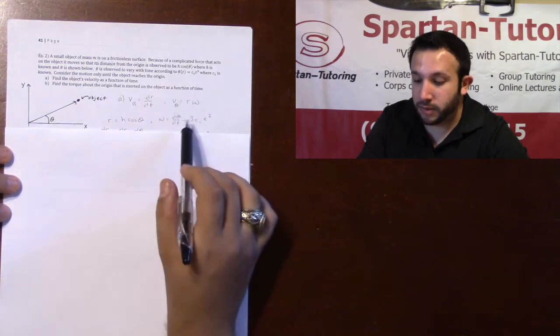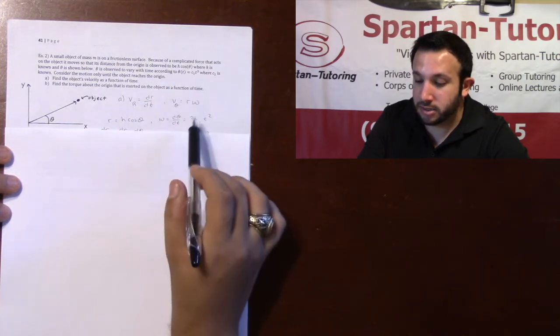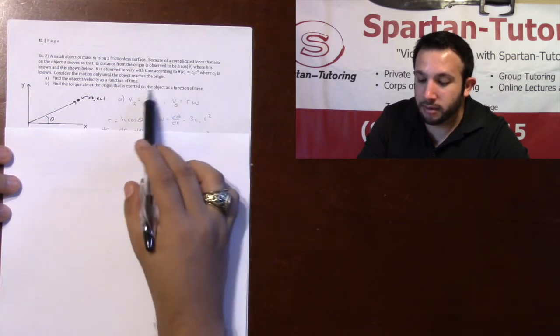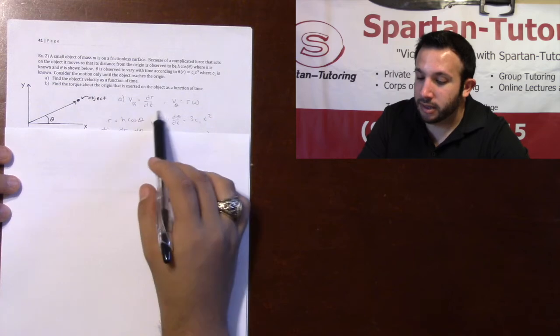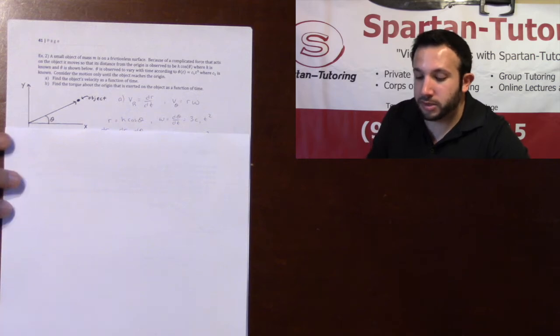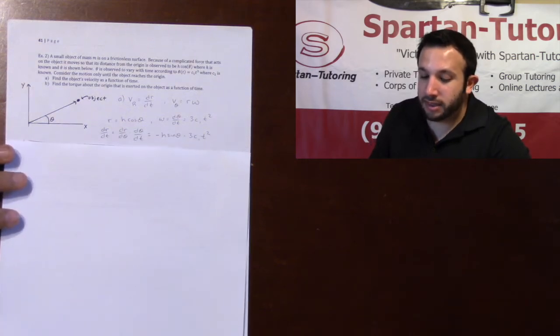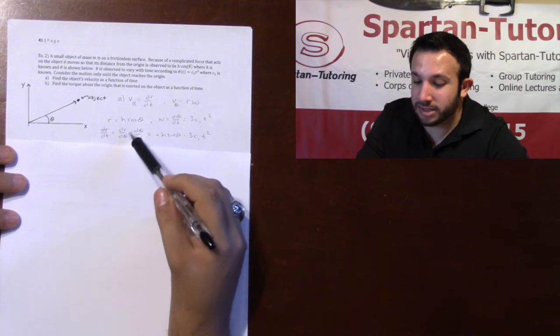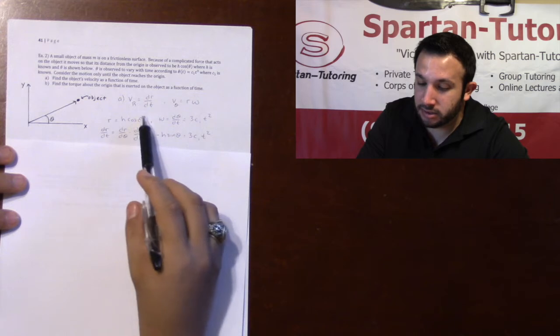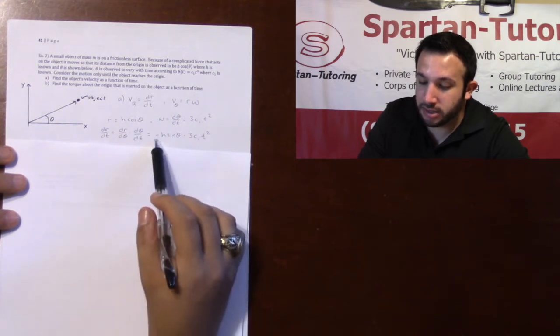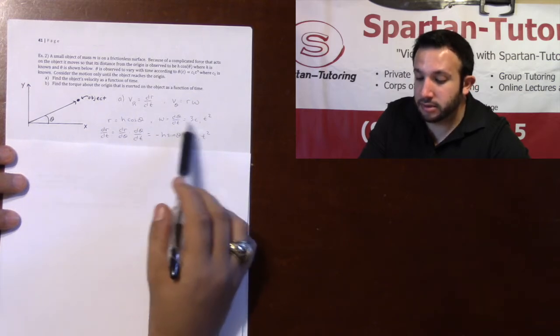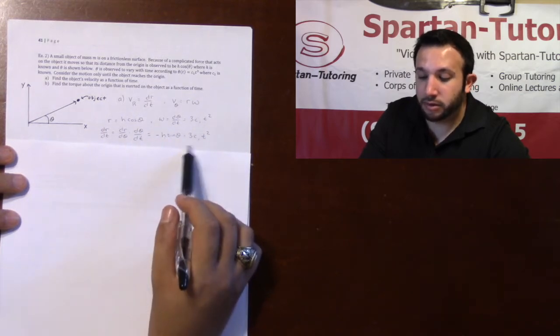The derivative of theta with respect to t is simply just 3c₁t². So I've got r, I've got omega, I've got to find dr/dt. And once again, if your r is changing with respect to theta, which you're going to do 100% of the time, is you're going to say that dr/dt is dr/dθ times dθ/dt. Now dr/dθ is the derivative of r with respect to theta, which is negative h sine theta. And dθ/dt is, well, we already found it, 3c₁t².